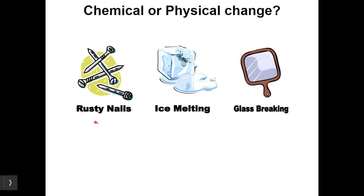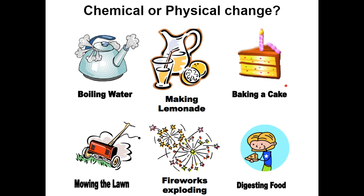Rusty nails — nails getting rusty, that's a color change. There's also a consistency change: the nail itself holds together but the rust does not, so that's a property change — chemical change. Ice melting — that's a state change, so that is a physical change. Glass breaking — you're just changing the size of the pieces, so that's a physical change. Boiling water — physical change, because it's just a change in state; it's still water, just water vapor. Making lemonade — this one's tricky. Making lemonade is a physical change because the lemon is still lemony and the sugar is still sweet; they're just mixed together and dissolved.